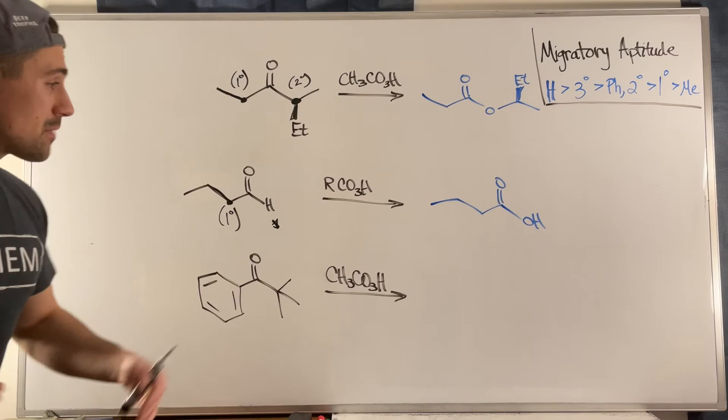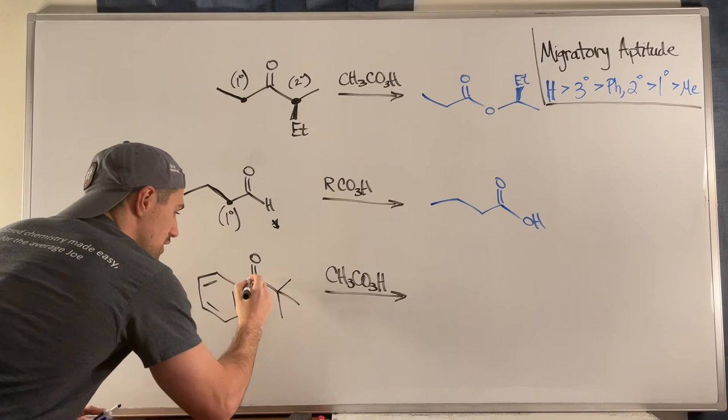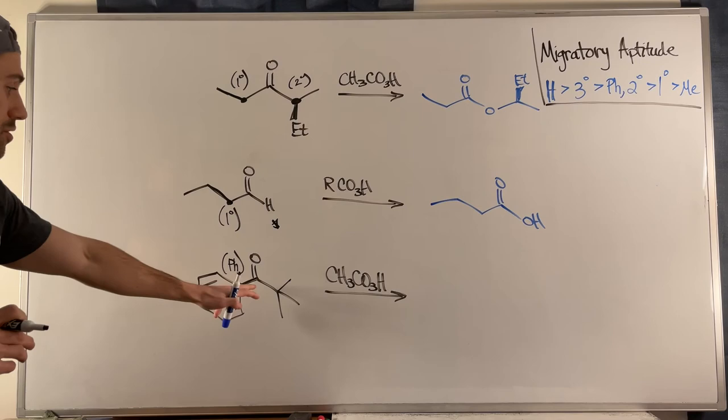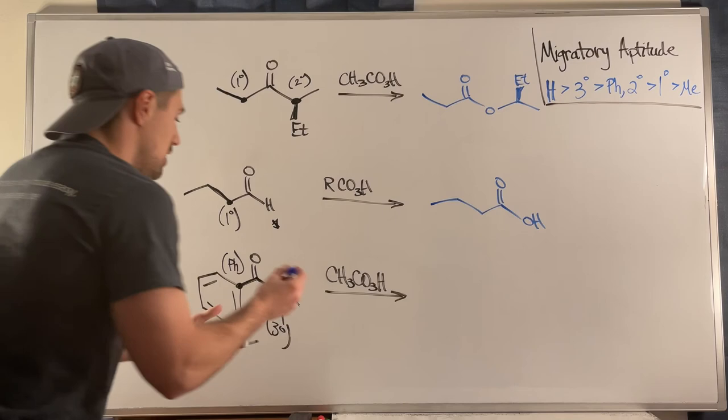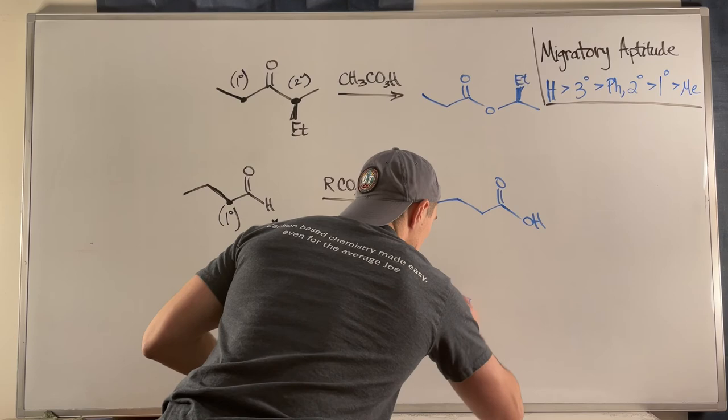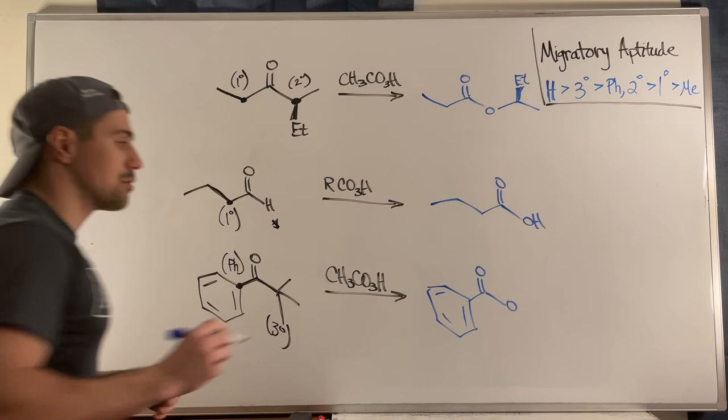Last but not least, down here: to the left of this group, we have a phenyl group — a benzene ring right off the carbonyl. And over here, remember we don't count the carbonyl, so one, two, three — this is tertiary. Consult the migratory aptitude list and you'd see: tertiary beats out phenyl. So we get an oxygen next door, and then the t-butyl group follows right there.